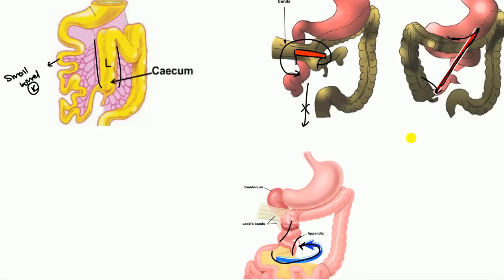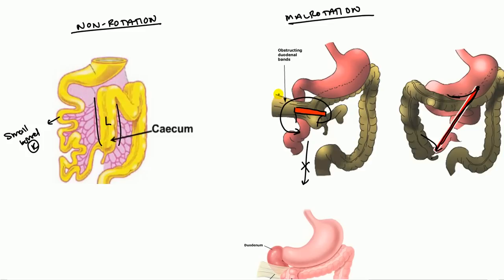And what also tends to occur in malrotation, which makes it more severe, is you get these bands. So these bands right here, these are called the LAD bands. And what this, as you can see, it actually goes, so this is your stomach. And this is the duodenum here. It actually goes over duodenum and it can compress it and it can cause obstruction.